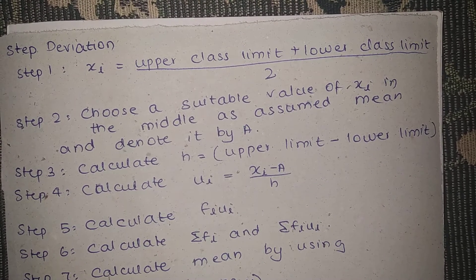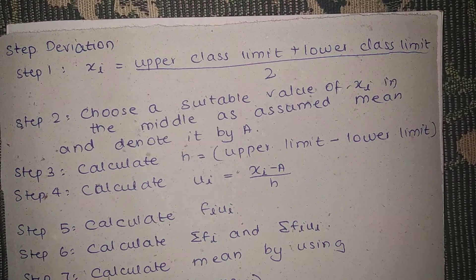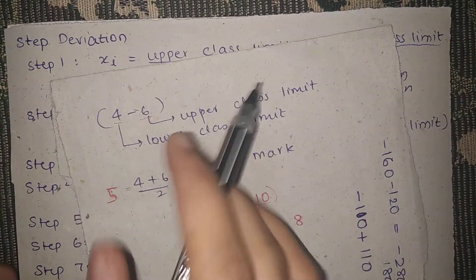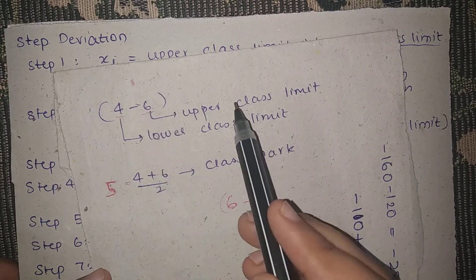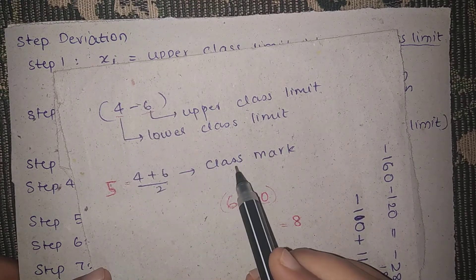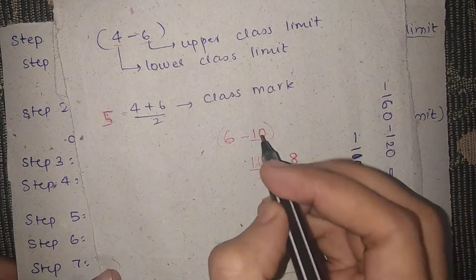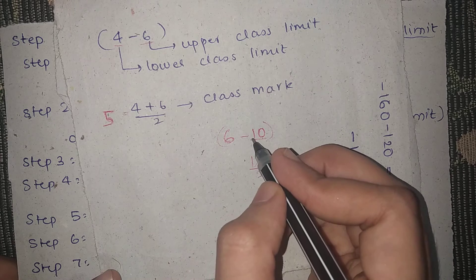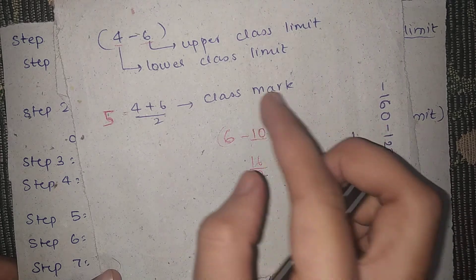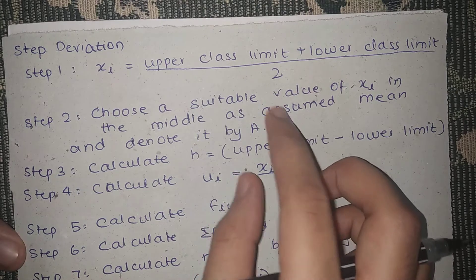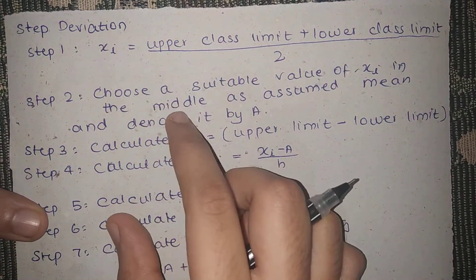We are going to find the class mark. The class mark is the upper class limit plus the lower class limit divided by 2. We have the class mark.